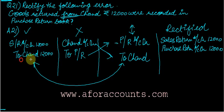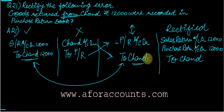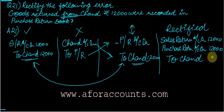Now for Chand — there is a Chand in the correct entry and a Chand in the reverse entry, so two Chands. This 12,000 plus this 12,000 needs to be summed up. 12 plus 12 is 24. So the final entry is: to Chand, 24,000.